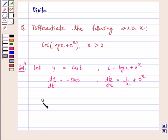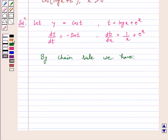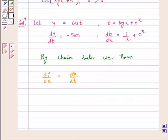Now by chain rule we have dy/dx = dy/dt × dt/dx.